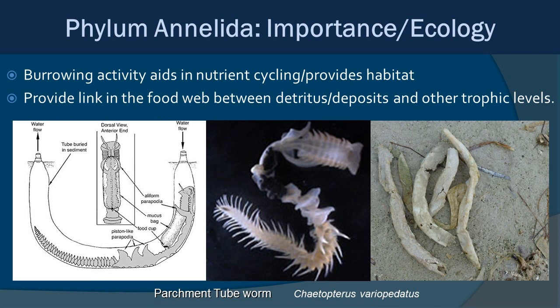Because so many polychaetes burrow in benthic sediments, they contribute hugely to nutrient cycling within the environment. They also provide habitat — for example, the parchment tube worm creates a U-bend tube that other organisms live in alongside it and uses a water current for filter feeding. Many of these worms provide the link in the food web between detritus and deposits on the bottom and different trophic levels.